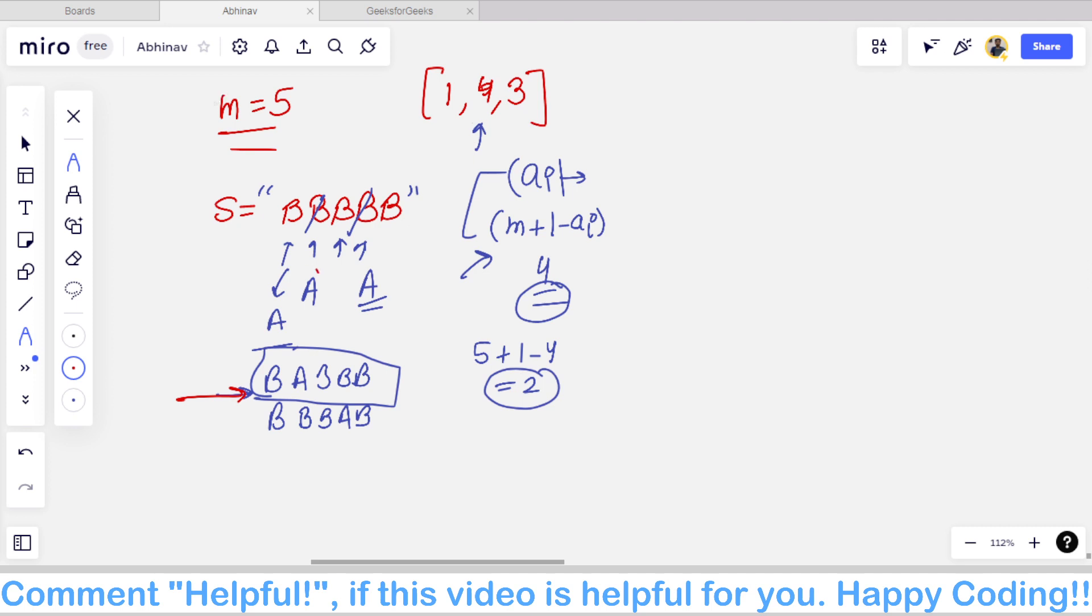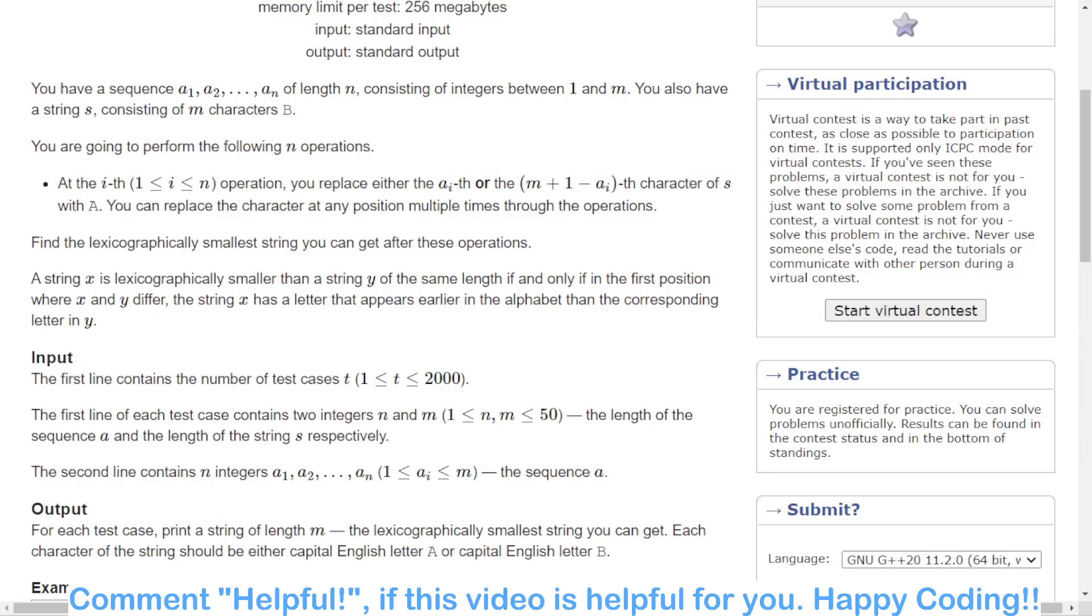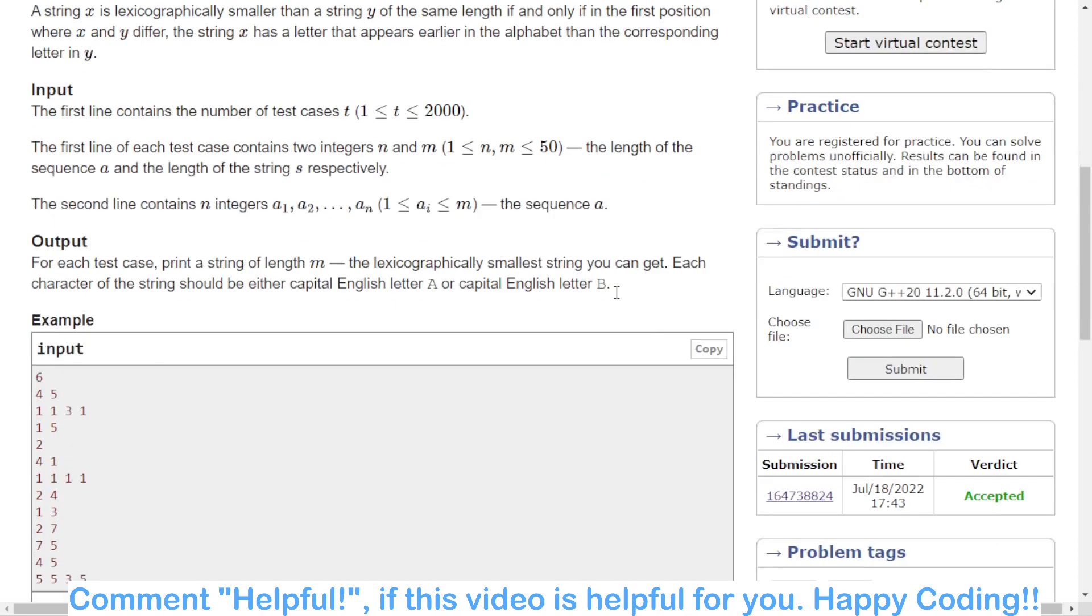If that element is already replaced, in that case we will change the other. We will just check for a_i and m plus one minus a_i. If it is already A, we don't care. If it is not A, we should just change it.